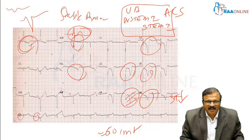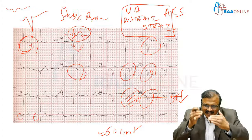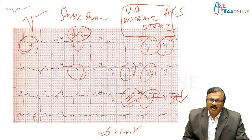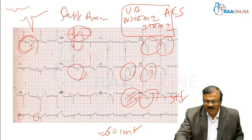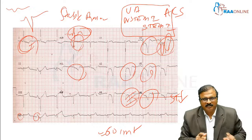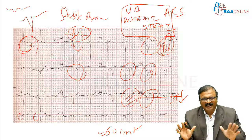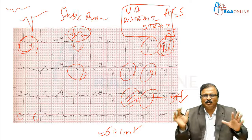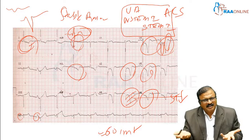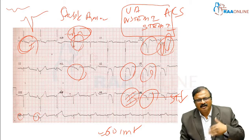LVH with ST depression most probably represents LVH with a strain pattern. In NSTEMI, the T inversion is symmetrical and deep, but here if you carefully observe, it is asymmetrical deep T inversion. By ECG alone we cannot definitively diagnose coronary syndrome — history is key. If the patient presents with angina and symptoms suggestive of ACS, then you call it NSTEMI, irrespective of other features. Risk factors like hypertension and diabetes confirm LVH and increase likelihood of CAD.